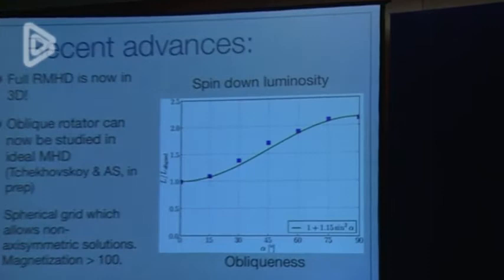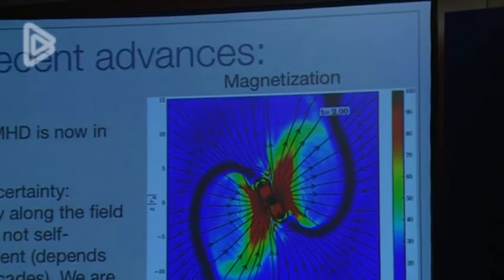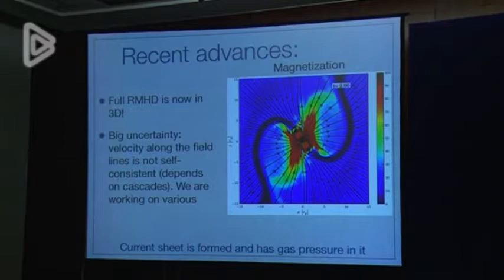We can now simulate magnetization on the order of 100 — the ratio of magnetic energy to kinetic energy. You can see that the current sheet forms here, and in the current sheet the plasma pressure is dominating, so the magnetization is low in the current sheet. That's interesting. Another recent thing we've tried is going to the limit of a pure particle magnetosphere and seeing what happens when you include pair formation effects.